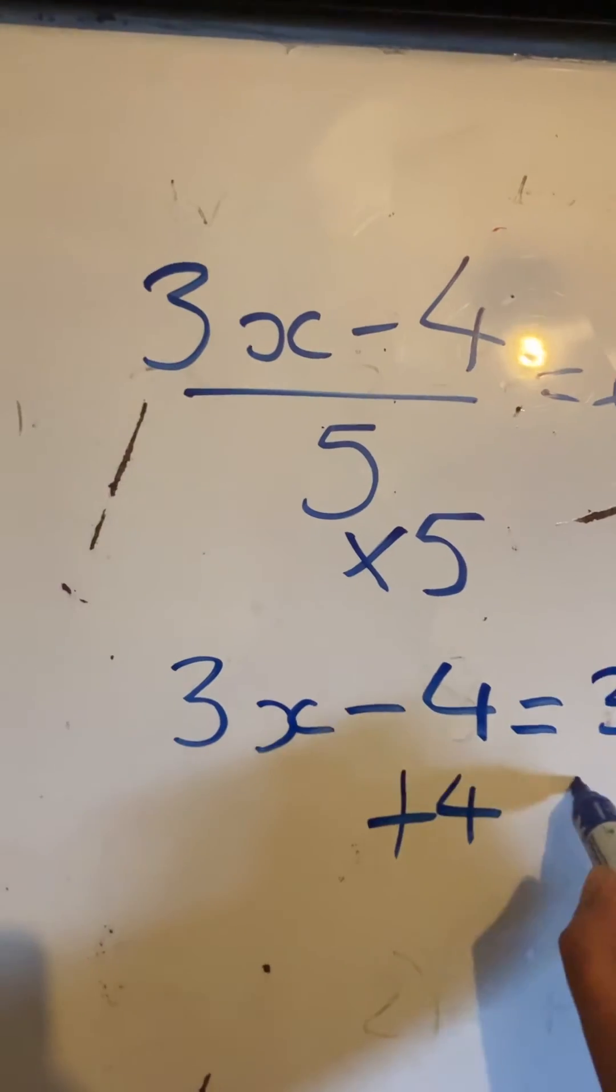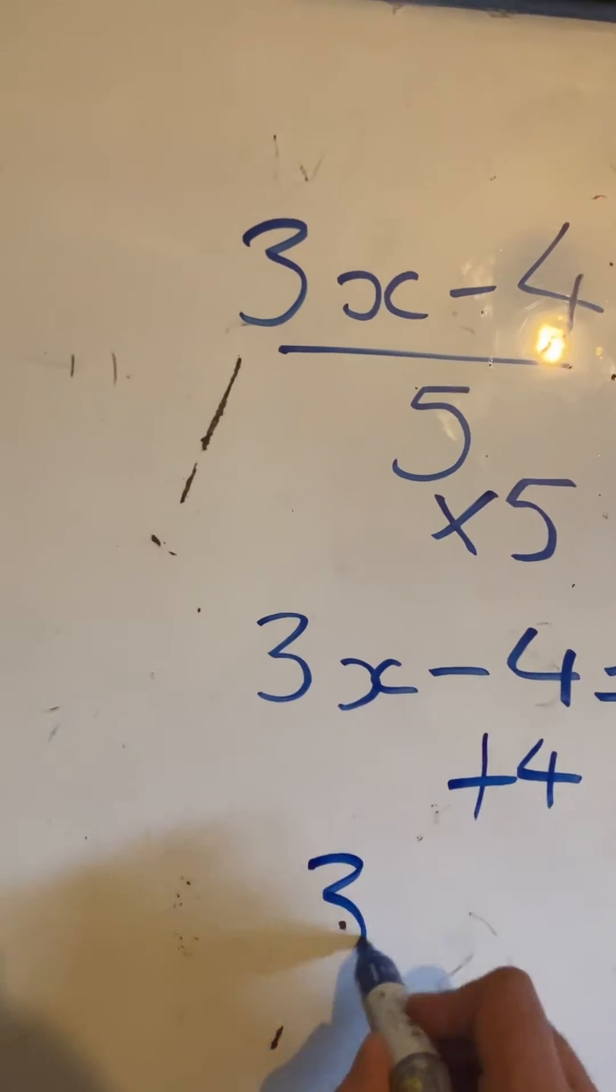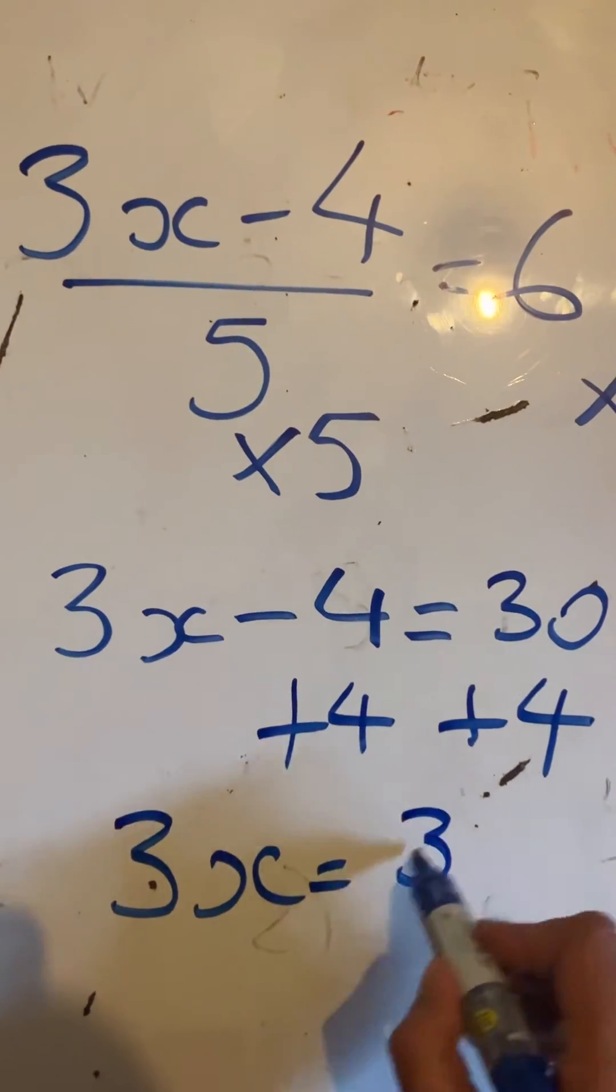Adding 4 to both sides to balance each side respectively, we get 3x is equal to 30 plus 4 which would be 34.